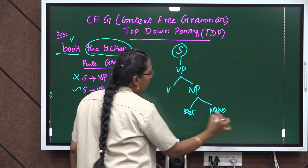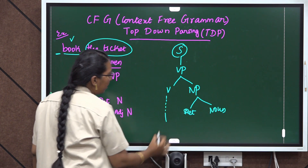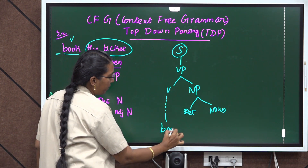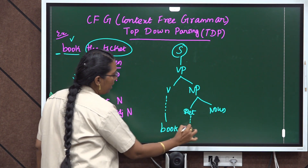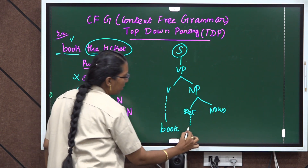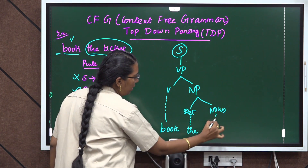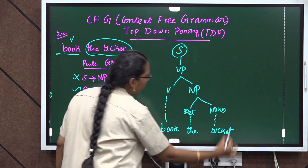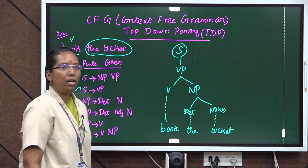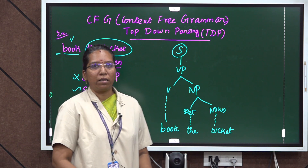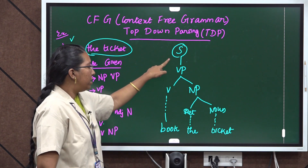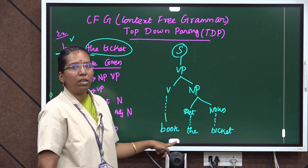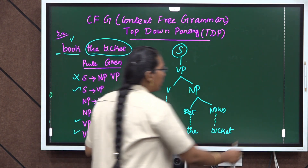Now we can write the words. What is the verb? Book is the verb. What is the determiner? 'The' is the determiner. What is the noun? 'Ticket' is the noun. So this is top-down parsing — we start from the starting symbol and then reach our words.